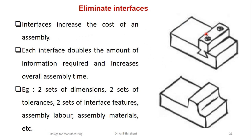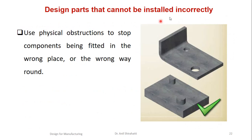Next, eliminate the interface. Interfaces increase the cost of assembly. Each interface doubles the amount of information required and increases overall assembly time — requiring two sets of dimensions, two sets of tolerances, two sets of interface features, assembly labor, and assembly materials. For example, if two separate parts are screwed together, there are two sets of dimensions and tolerances with an interference fit, and screwing may cause the assembly to lose functionality. This can be eliminated by combining into a single part, either machined or forged depending on the requirement.